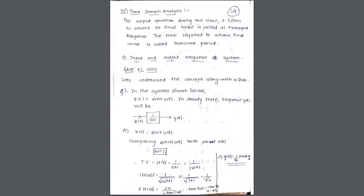To find the angle: the angle of (x+jy) is tan⁻¹(y/x) = tan⁻¹(ω/1) = −tan⁻¹(ω). With ω = 1, this gives −tan⁻¹(1) = −π/4. Therefore, y(t) = (1/√2)·sin(ωt − π/4).